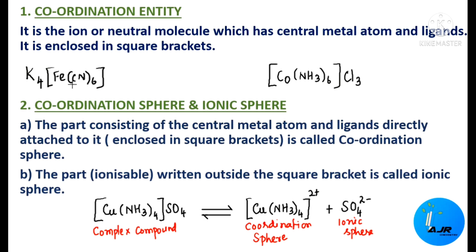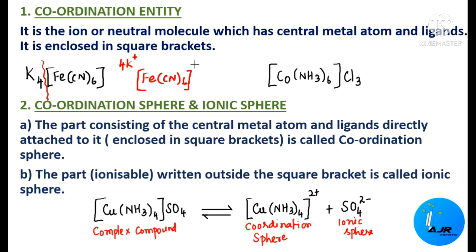When you break this compound, it becomes 4K⁺ and the next part. Always in a complex, the first half will be a positive entity and the next half will be the negative one. So here we have Fe, and [Fe(CN)₆]⁴⁻ is the coordination entity — an ion enclosed in a square bracket with a charge of minus 4.